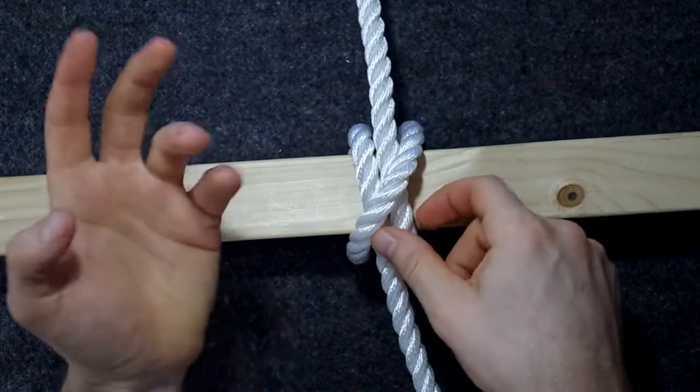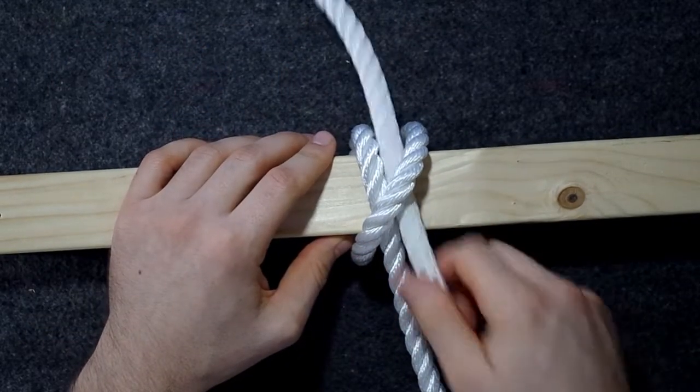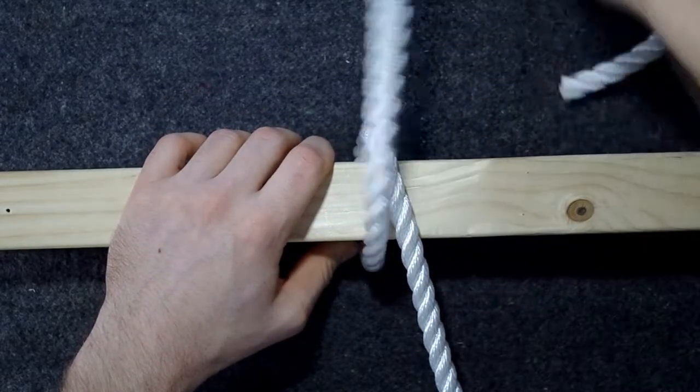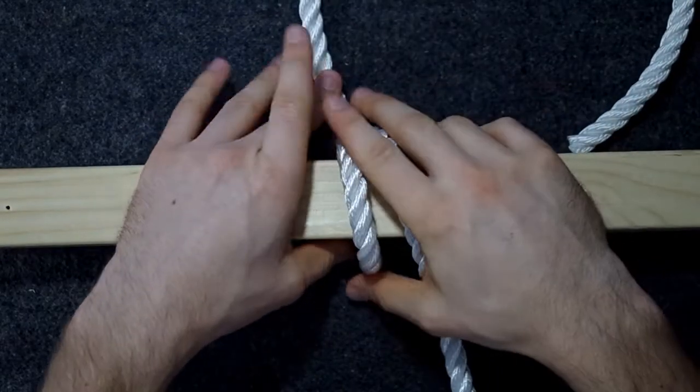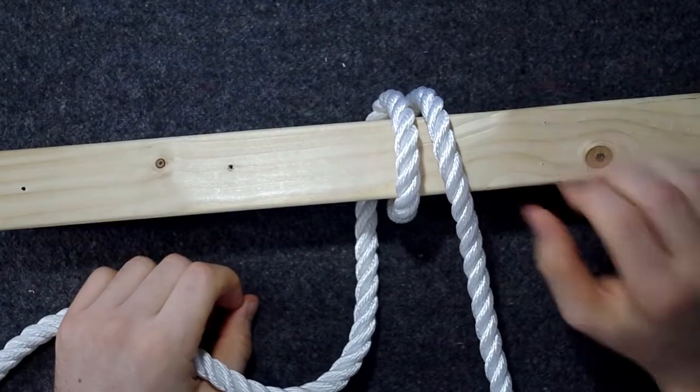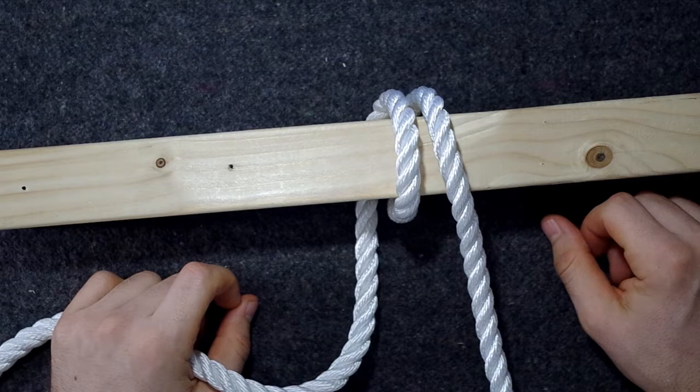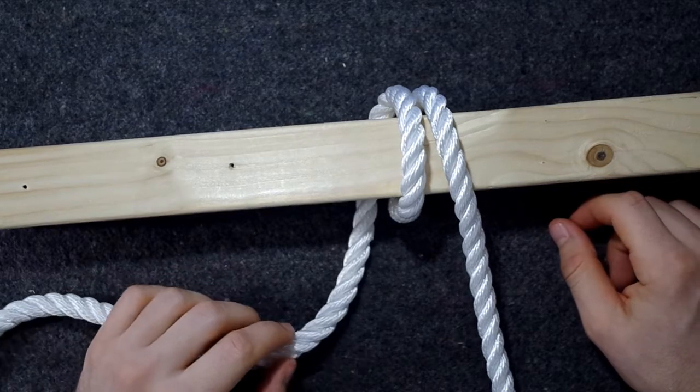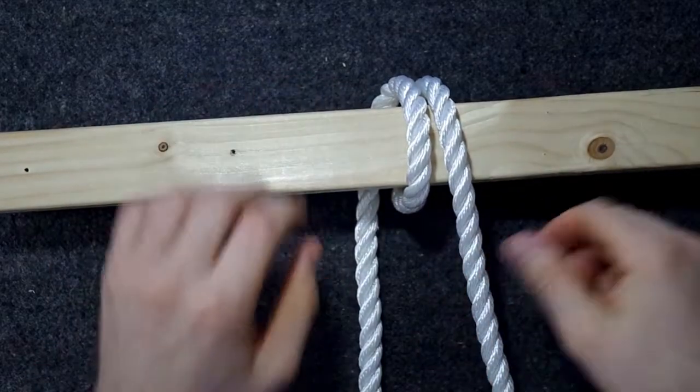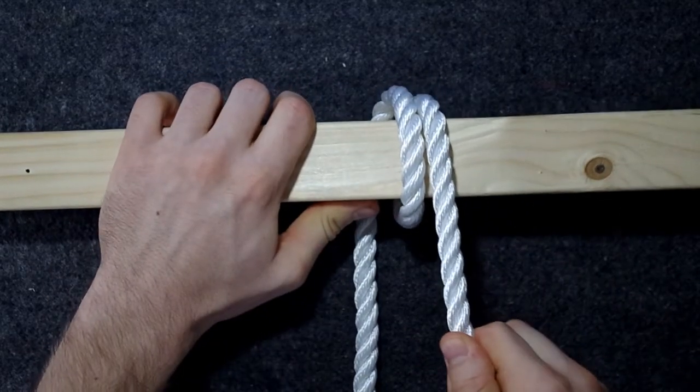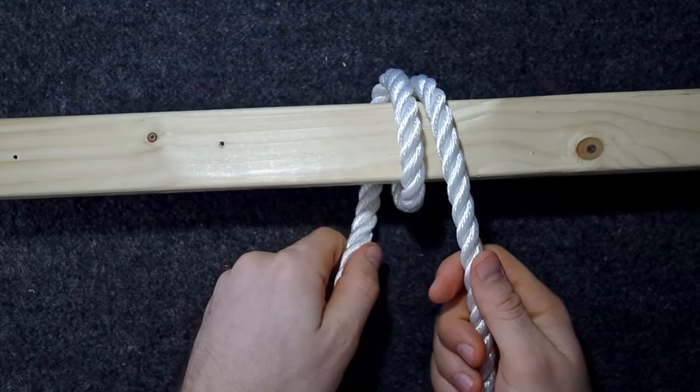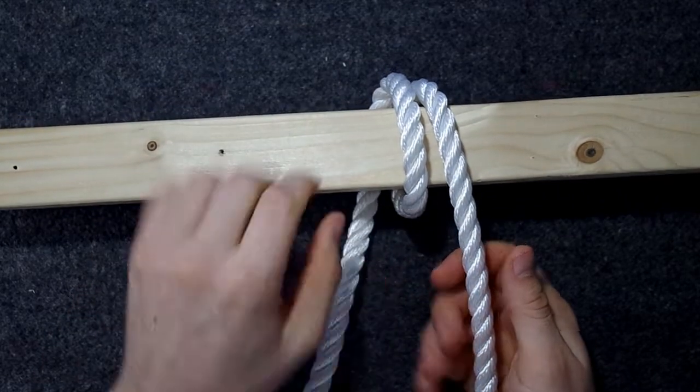This knot, as all knots, relies on friction. When doing this, you can refer to the Euler-Eytelwein equation, and it relates the tension of the two rope ends. So the tension here, if this is the loaded part, the tension here is equal to this.